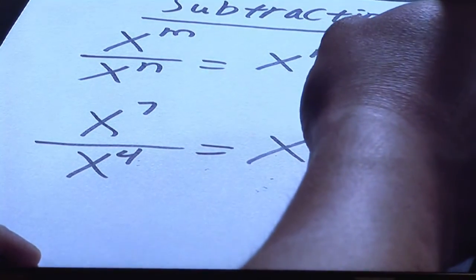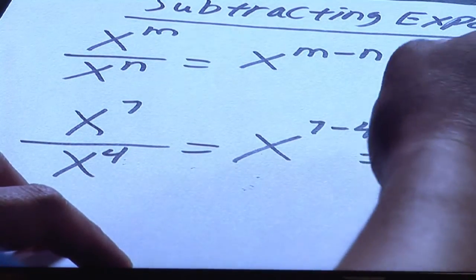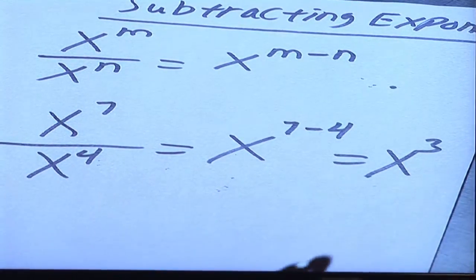So it'll be x to the seven minus four, which of course is three, and so your final result will be x to the third.